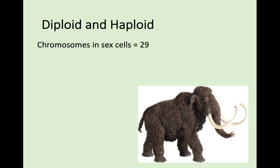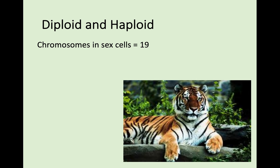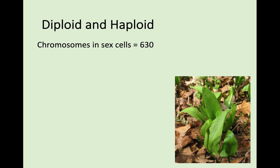Switching it up: if a woolly mammoth's gamete has 29 chromosomes, how many would be in their body cells? You would find 58, because body cells are diploid — double the number of the gametes. For a tiger, 19 chromosomes in the sex cells means 38 in the body cells. Finally, some plants have massively more chromosomes: if the pollen or ovule of a plant contains 630 chromosomes, the body cells would contain 1260.